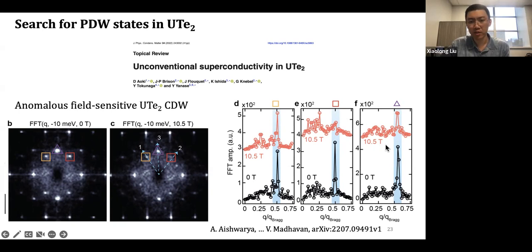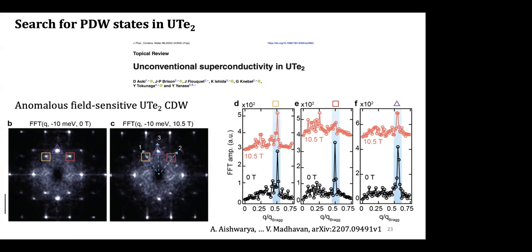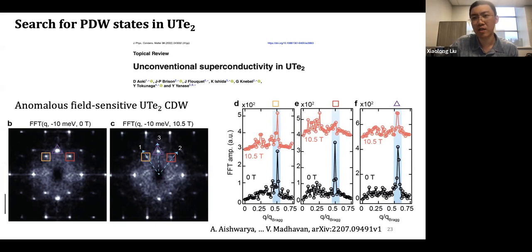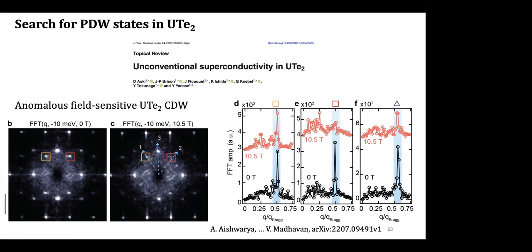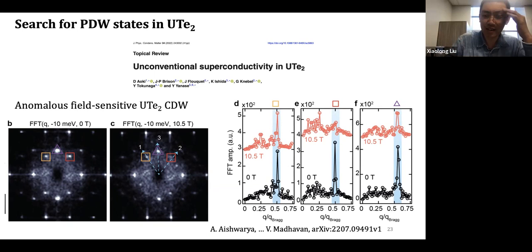The charge density wave exists in UTe₂ and is incommensurate. UTe₂ itself is a superconductor below around 1.6 K. However, I should clarify that a bulk charge density wave is not established; at least from STM data this is a surface effect. Neutron scattering techniques have not proven this in the bulk.